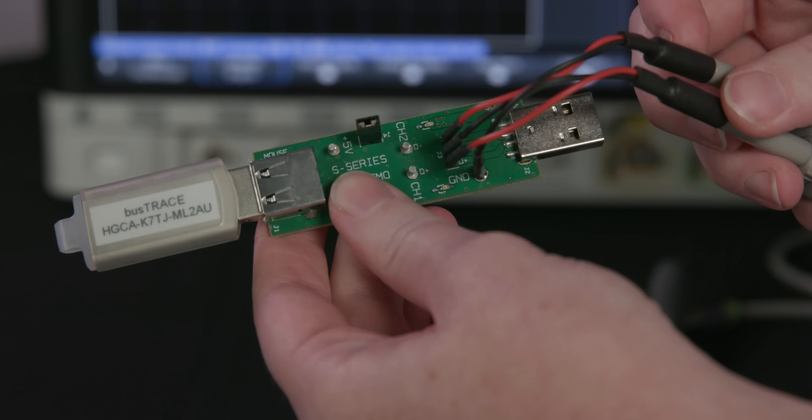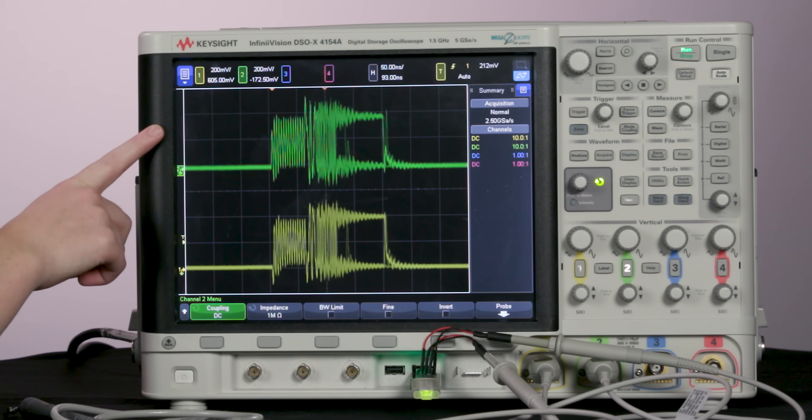First, let's use the old-school method. Two single-ended probes, each connected to one signal, and then grounded. Now you can see on screen that we have one of the signals on channel 1 and the other on channel 2.